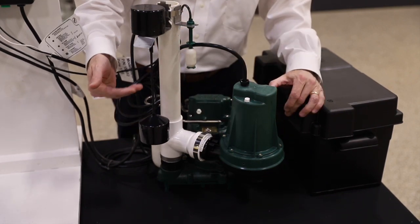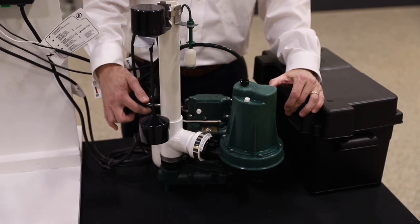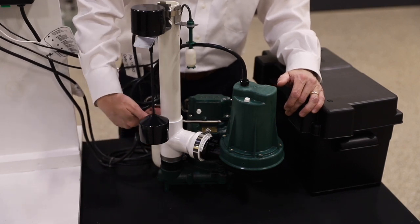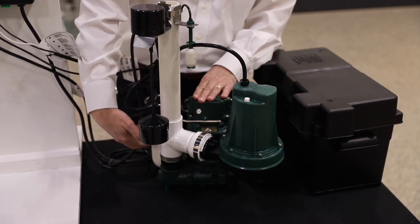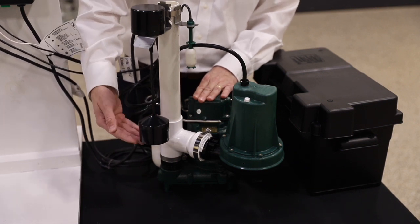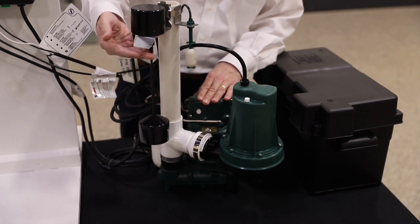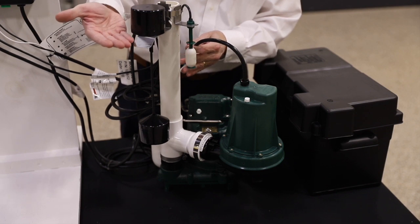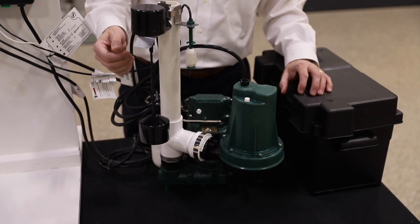You want to make sure that your on and off levels for your switches aren't going to interfere with the other pumps operation. So for example, this pump, the primary pump, will turn on at about this water level. That's where this float will come up. The DC pump will turn on at about this water level, and then the high water is a little bit higher than that, perhaps about right here. So all three of those are different levels. You don't want them to be overlapping.